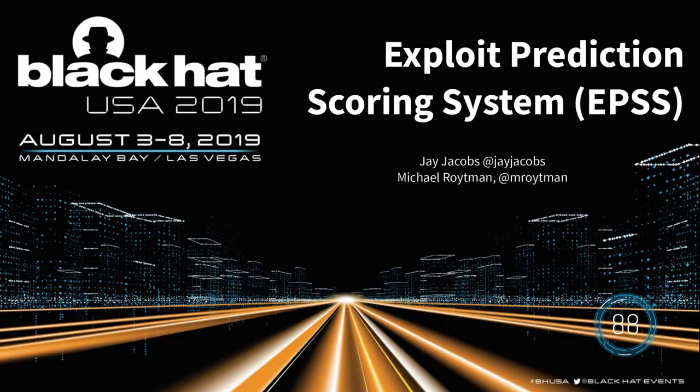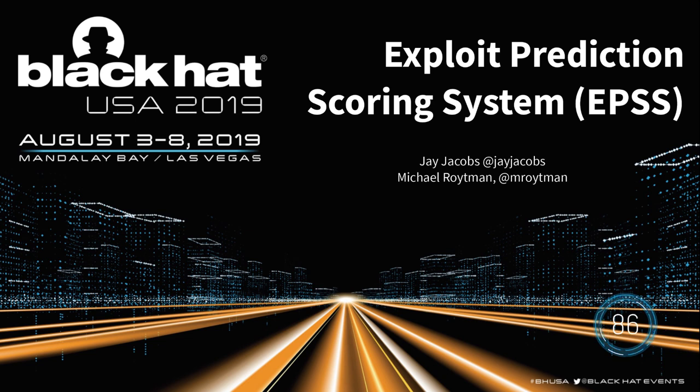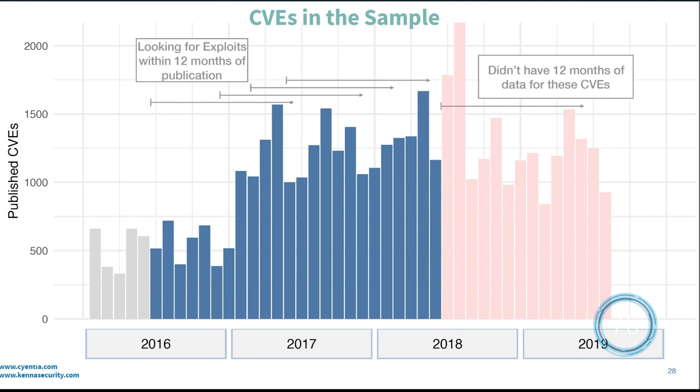At Black Hat 2019, the Scientia Institute shared Predictive Vulnerability Scoring System, which unveiled a new model to rate vulnerabilities. They compared 25,000 published CVE vulnerabilities between 2016 and 2018 against 921 observations of exploitations in the wild.